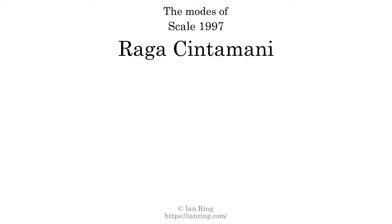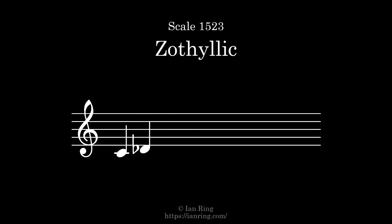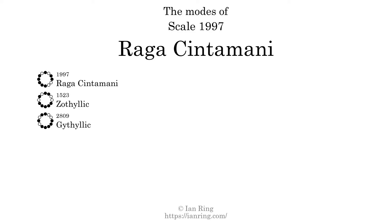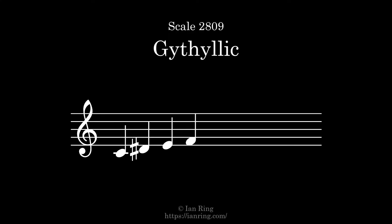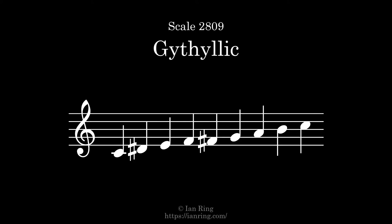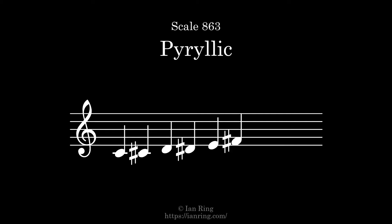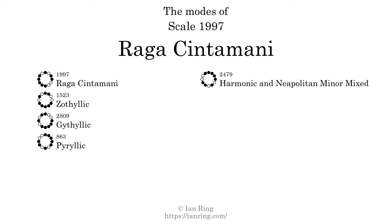This scale has 8 modes. The first mode is itself. The second mode is scale 1523, also known as zoethilic. The third mode is scale 2809, also known as geethilic. The fourth mode is scale 2479, also known as harmonic and neapolitan minor mixed.